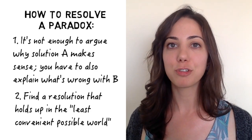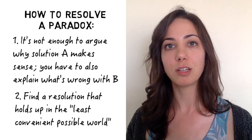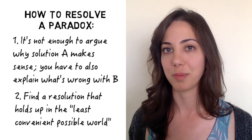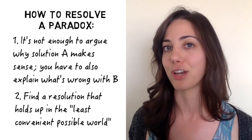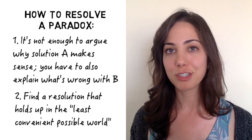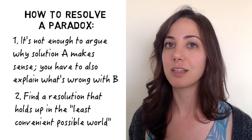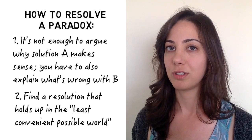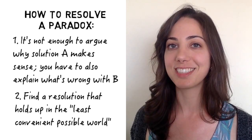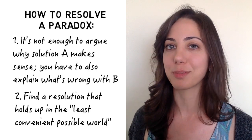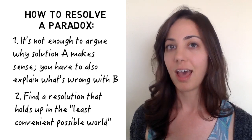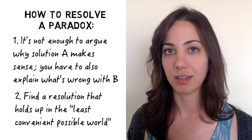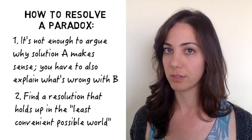So those are the two principles I want to leave you with — not just for tackling paradoxes and thought experiments, but for arguments in general. First, it's not enough to find a plausible argument for one side; you have to also check and see if there are equally plausible arguments for other sides. And second, imagine your argument in the least convenient possible world.